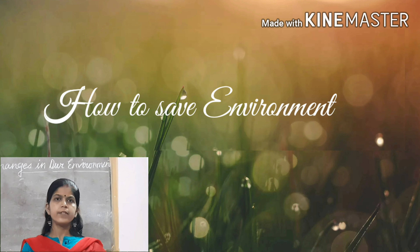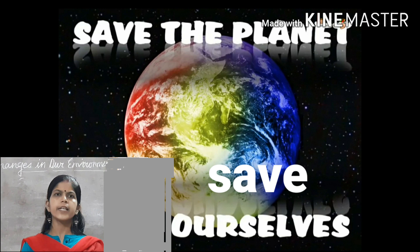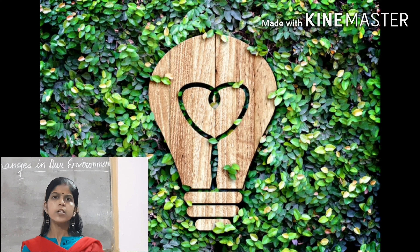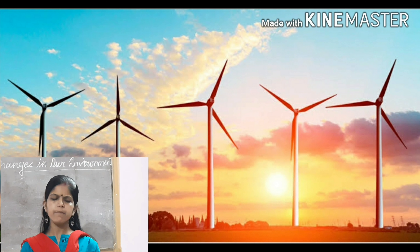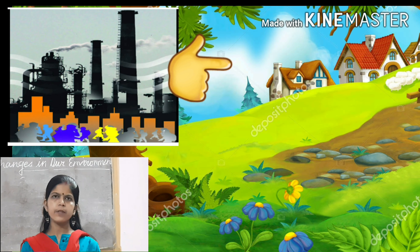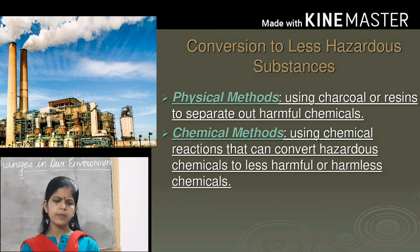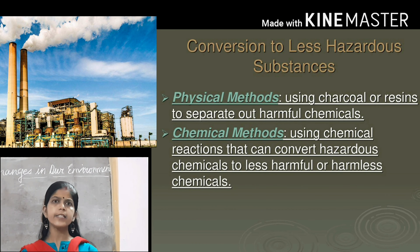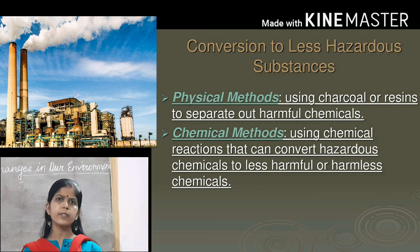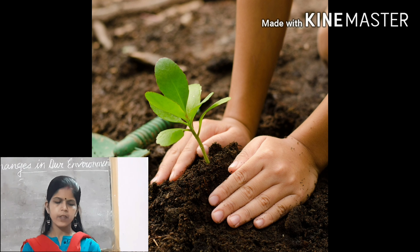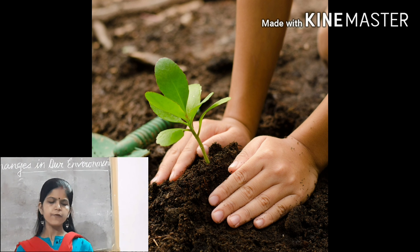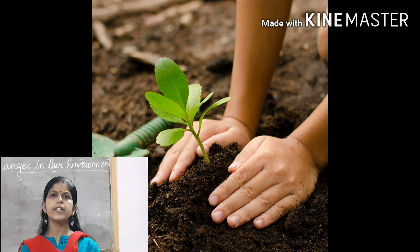Now we will learn how to save the environment. Some of the steps taken by our government are: first, alternative sources of energy such as solar and wind power to be used in place of electric energy. Second, factories shall be shifted away from the main city. Also, factories are asked to convert harmful substances into harmless substances before releasing them.